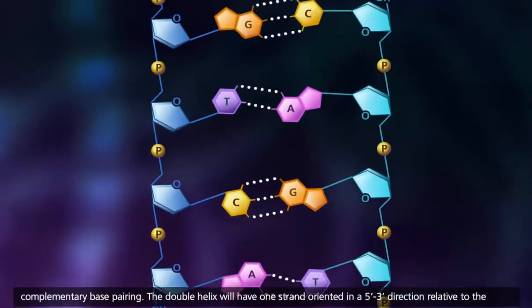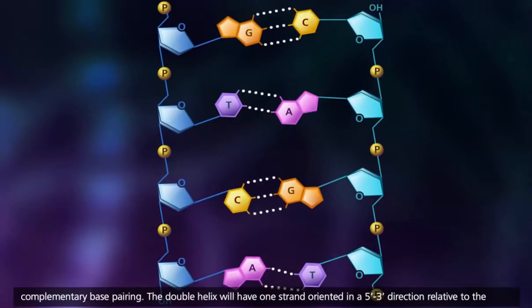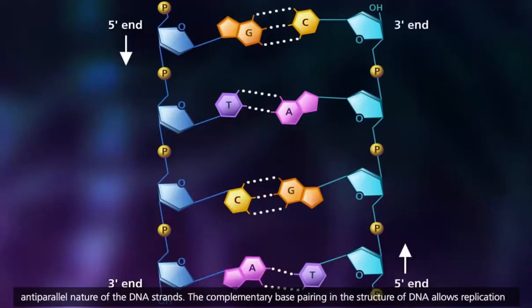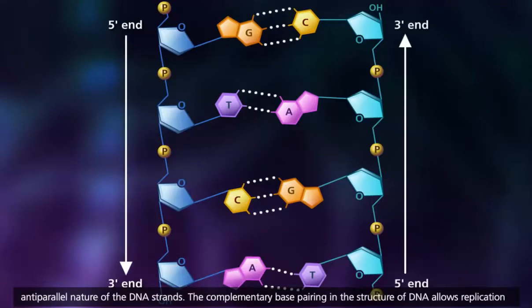The double helix will have one strand oriented in a 5' to 3' direction relative to the hydroxyl group of the deoxyribose sugar, and the other strand oriented in a 3' to 5' direction. This shows the anti-parallel nature of the DNA strands.